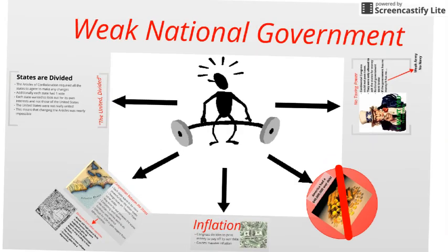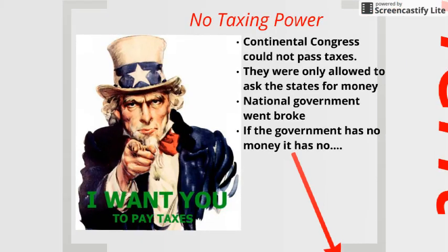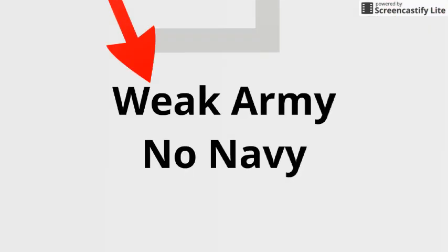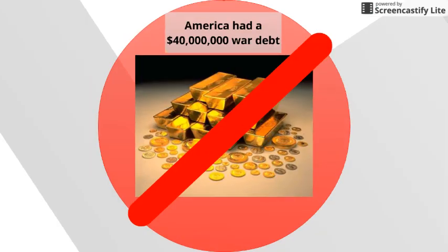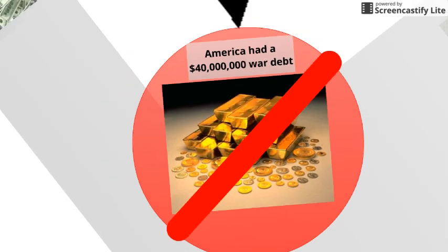Looking at our weak national government, the thing that probably made them weakest is that in order to raise money, the Congress — the National Congress — could only ask the states for money. Look at number six: they couldn't tax. They don't have any power to tax. If you don't have any power to tax, it means you don't have any money, because typically the states are going to say no — they'd rather keep that money. So we have a very weak army and a pretty much non-existent navy, and we're in all this debt from the war. The French had helped us out, but they expect to be paid back — $40 million worth of war debt.